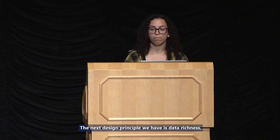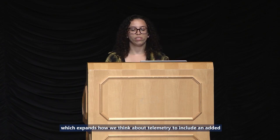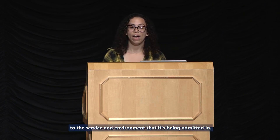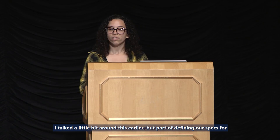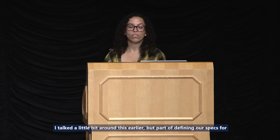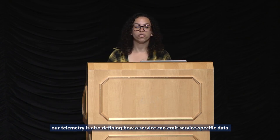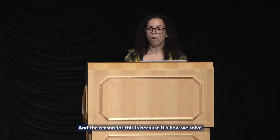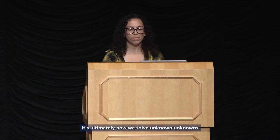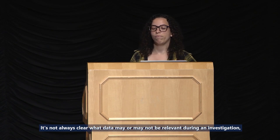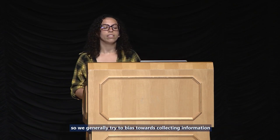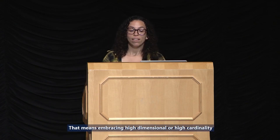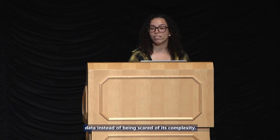The next design principle is data richness, which expands how we think about telemetry to include flexibility that allows us to collect data specific to the service and environment it's being emitted in. Part of defining our telemetry specs is also defining how a service can emit service-specific data. This is ultimately how we solve unknown unknowns — it's not always clear what data may or may not be relevant during an investigation. We generally try to bias towards collecting information that can't be found elsewhere, which means embracing high-dimensional or high-cardinality data instead of being scared of its complexity.